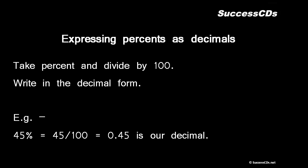Expressing percent as decimals: we follow the same method - take percent, divide by 100, write in the decimal form. Example: 45 percent will be written as 45 divided by 100 which in decimal form comes out to be 0.45.